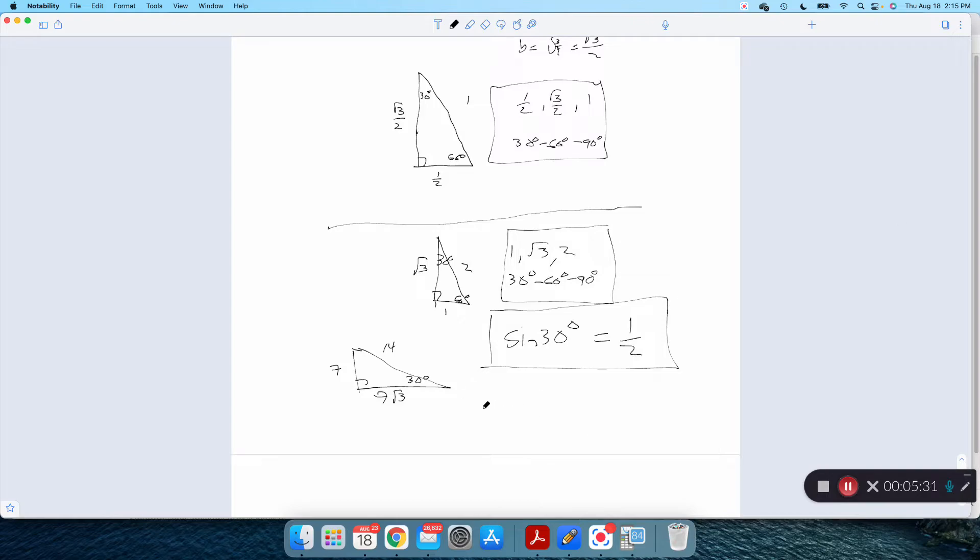What about cosine of 30? Cosine of 30 will be adjacent over hypotenuse. And I can use any version of this triangle. Root 3 over 2 over 1. Or, in this version, adjacent over hypotenuse, root 3 over 2.